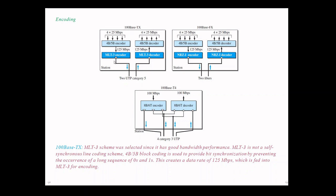For 100BaseTX, the MLT-3 scheme was selected because it has good bandwidth performance, but the problem is MLT-3 is not a self-synchronous line coding scheme. For that, we are going to use additionally 4b/5b block coding that will provide bit synchronization by preventing the occurrence of long sequences of zeros and ones. In 100BaseTX, two UTP cables were used, one for reception and another for transmission.